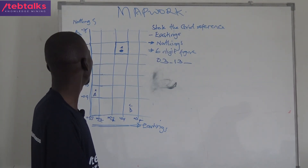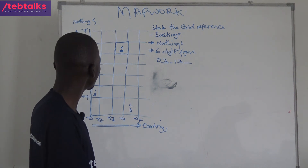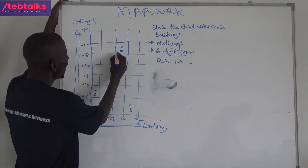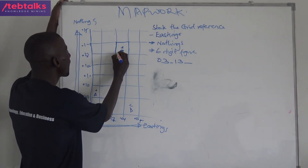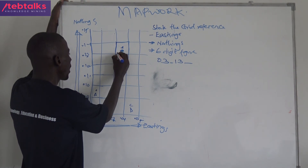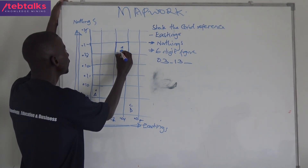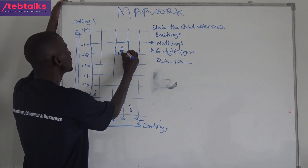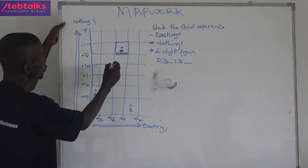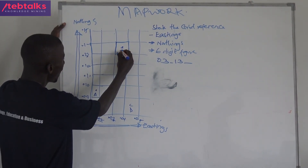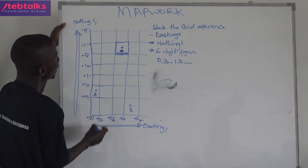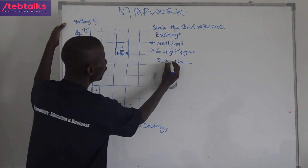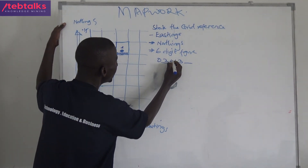I said anything in this box, its eastings is 03 and its northings is 13. But we should have six digits — so far we have four: 03 for eastings and 13 for northings. To get the remaining two digits, I divide the box into nine equal portions — one, two, three, four, five, six, seven, eight, nine. To reach this feature in the middle, I count how many small lines: one, two, three, four — so four becomes my third digit.